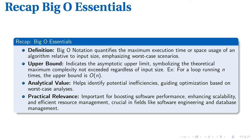Big O notation plays a crucial role in the realm of algorithm analysis. It's used to quantify the maximum execution time or space usage of an algorithm relative to the size of the input, focusing primarily on the worst-case scenario. When we talk about the upper bound in Big O notation, we're referring to the asymptotic upper limit — the theoretical cap on complexity that an algorithm won't exceed, no matter how large the input. For instance, a loop running N times has an upper bound of O(N).